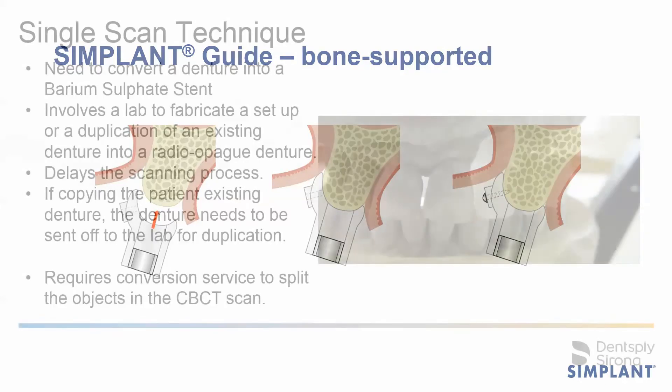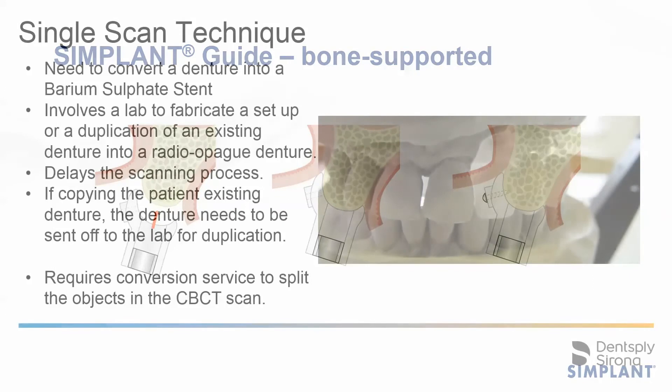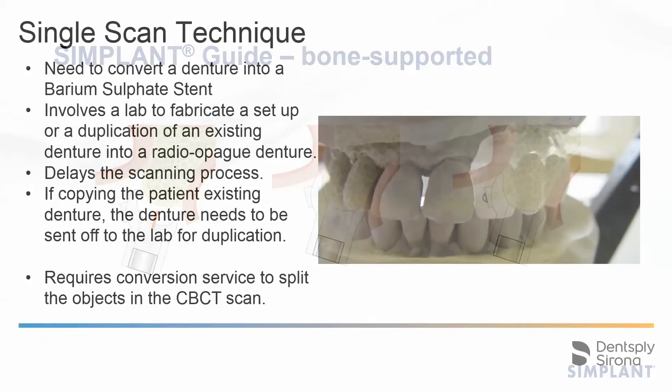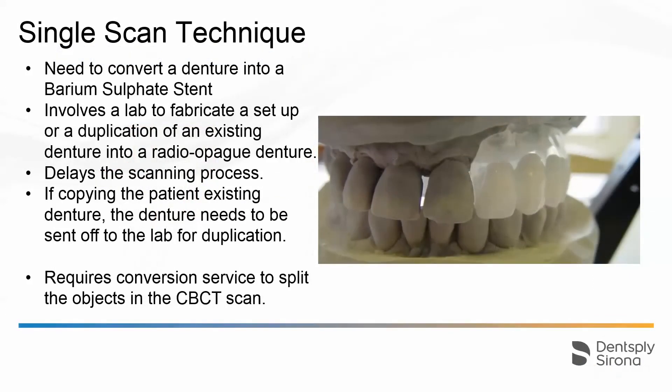From a production point of view we do not need a prosthesis scan to fabricate a bone supported stent. However from a planning perspective you would need a prosthesis in your scan simply to give you the guidance of where to place your implants, the angulations, and the limitations you can work with in terms of a prosthesis outline.